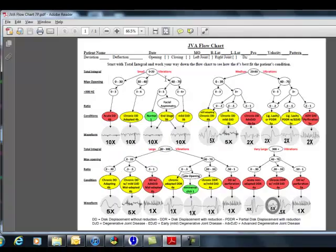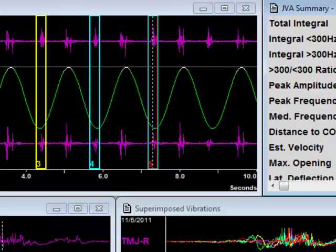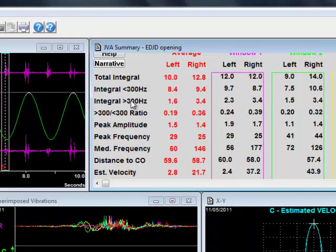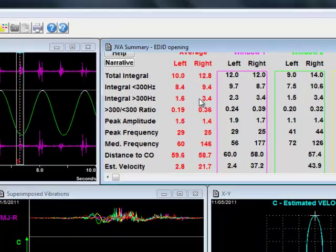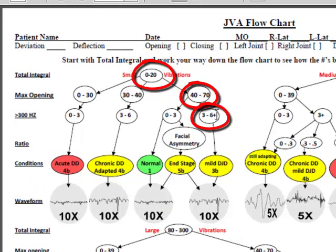We move to this bubble. The third thing we look at is our energy greater than 300 Hz. Looking at this, the energy greater than 300 Hz is 3.4, so then we move to this bubble.